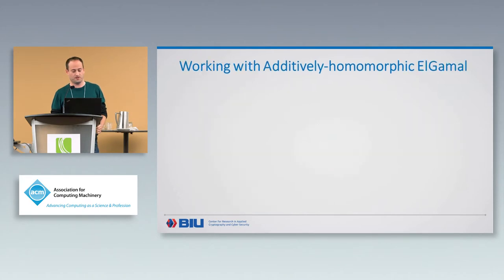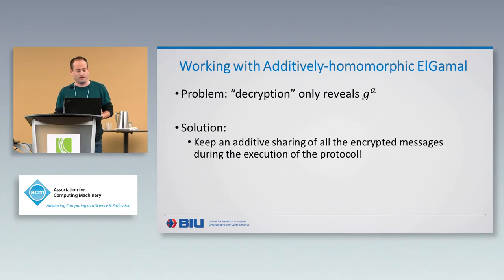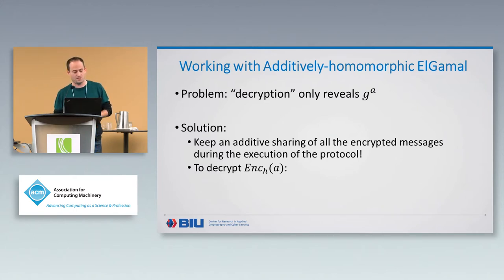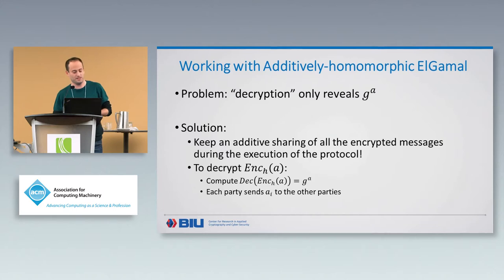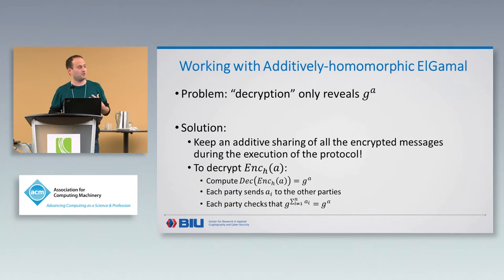To overcome this, we keep an additive sharing of all the encrypted messages during the execution of the protocol. When we want to decrypt some encryption, we run the decryption protocol to obtain G to the A, and then each party sends its share of A to all other parties. The parties take G to the sum of these shares and check that it equals the value from the decryption. If the equality holds, they know they hold the correct encrypted message; otherwise, the parties abort.